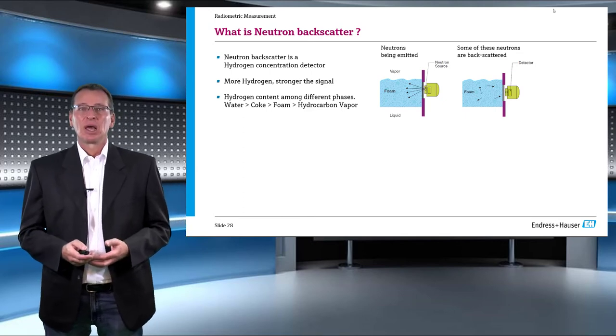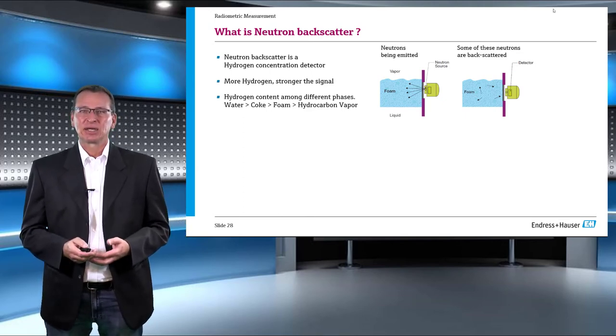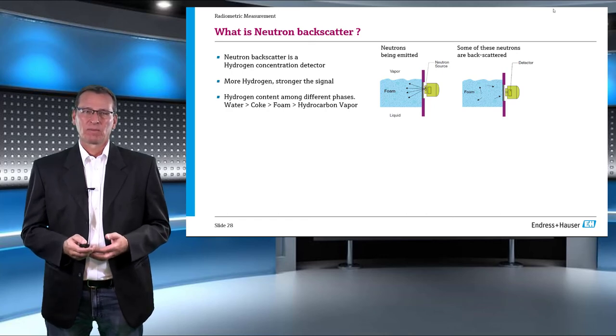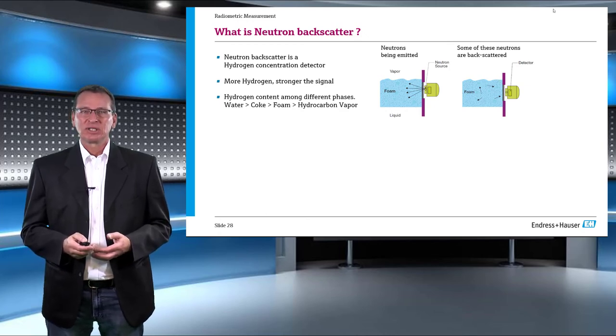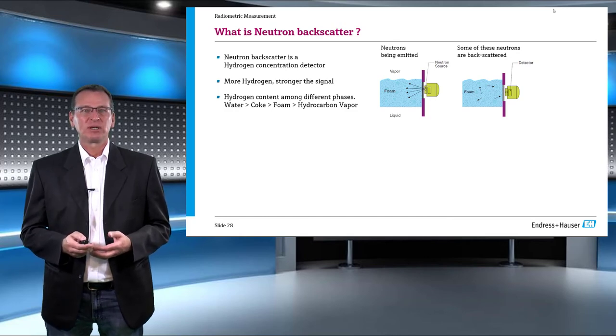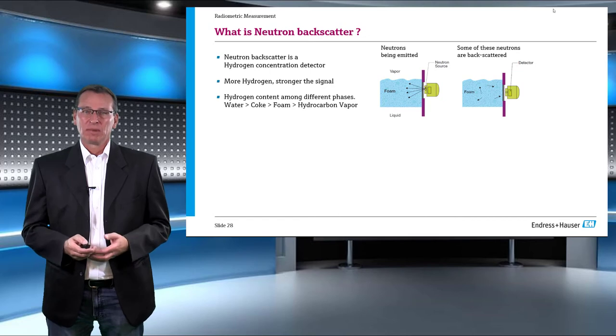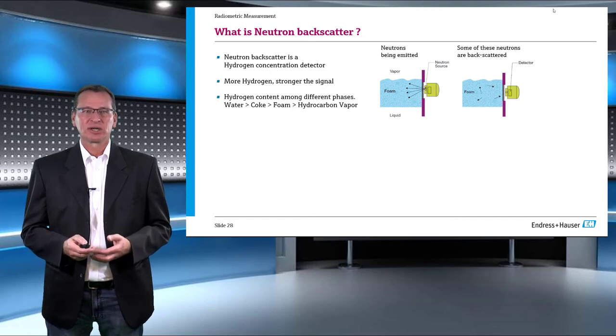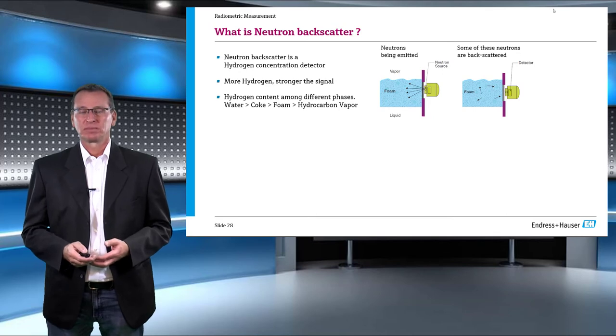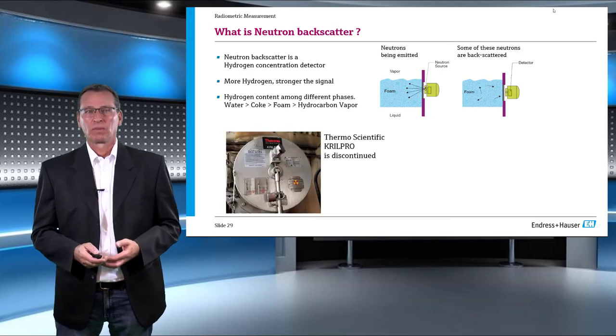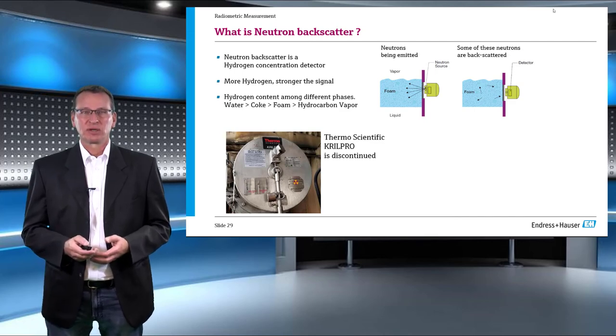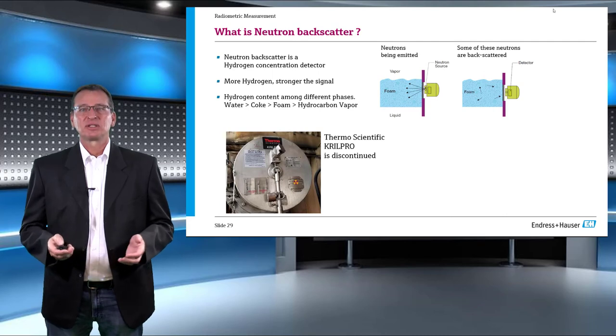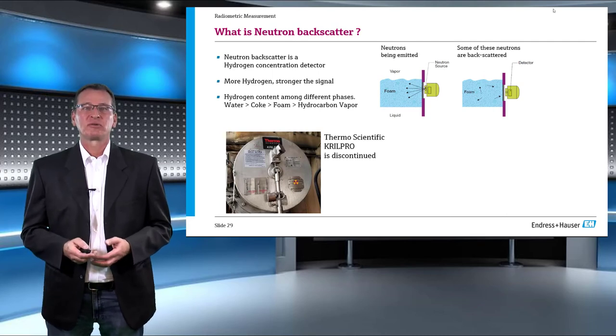The hydrogen content among different phases inside a coker unit varies significantly. Water has maximum hydrogen content followed by coke, foam, and hydrocarbon vapor. So this allows the system to differentiate between different phases. Normally, a coker unit has multiple neutron backscatter source-detectors along with a gamma system. However, there was only one vendor in the market who was producing neutron backscatter, Thermo Fisher Scientific, and they have decided to close this unit from the start of January 2020.